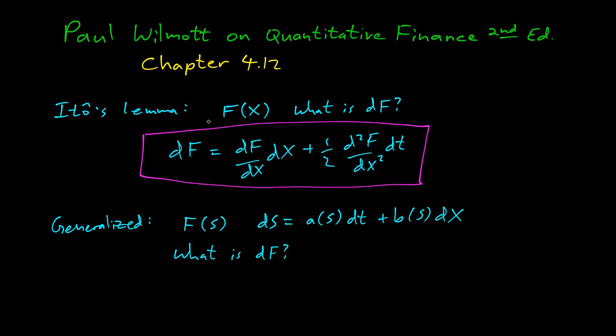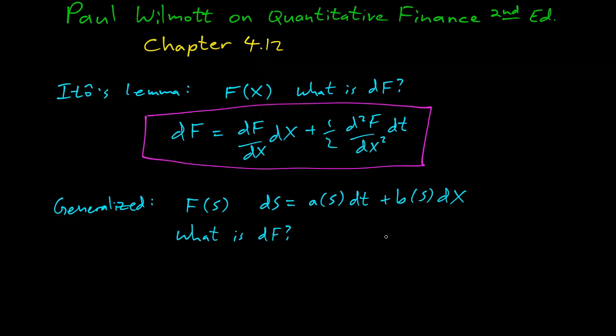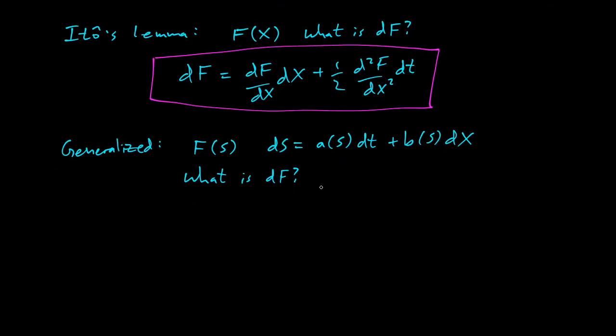This is a similar question to the Ito's lemma situation, but it's a little bit more general. How do we start? If you remember the argument for deriving Ito's lemma, we're going to do a similar type of thing. It's not entirely mathematically rigorous, but it's a good intuitive explanation. We want to do a Taylor series expansion.